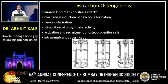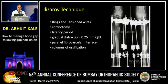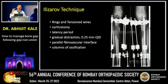Distraction osteogenesis brings about intramembranous ossification. A ring external fixator is used, a corticotomy is performed, and one waits for a period of seven to ten days for soft callus to appear. This soft callus is then distracted gradually at the rate of about one millimeter per day.